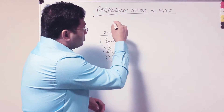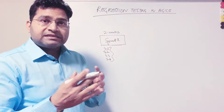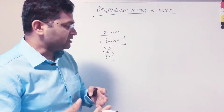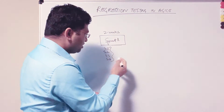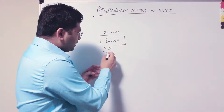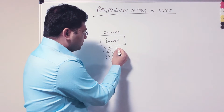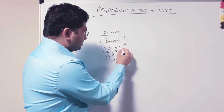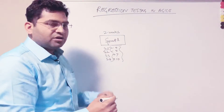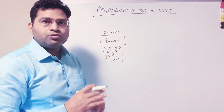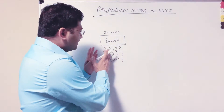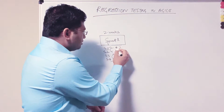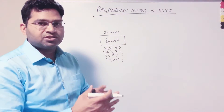When we talk about regression testing in agile, it becomes challenging — especially if you are doing manual regression testing. Say for example in Sprint 1 you have four stories, and each story has a number of test cases: say four, five, seven, and ten test cases respectively. These are the test cases written and executed for those four user stories to verify the functionality is as expected.